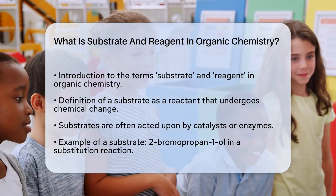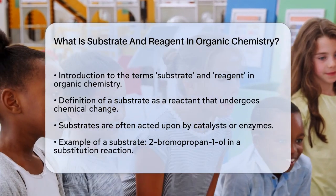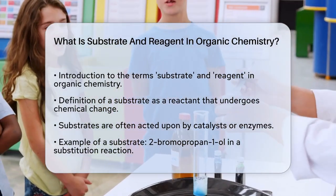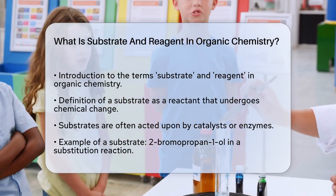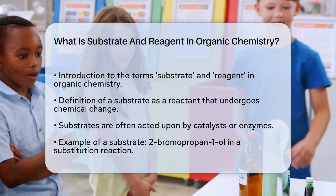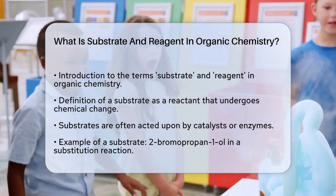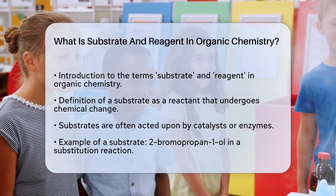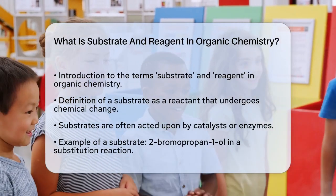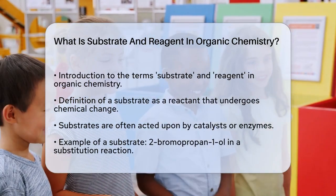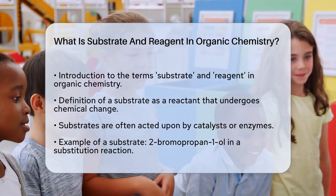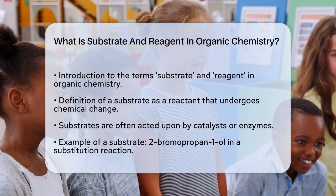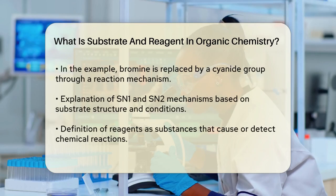First, let's talk about the substrate. In organic chemistry, a substrate is essentially a reactant that undergoes a chemical change during a reaction. This change is often facilitated by a catalyst or an enzyme. Think of the substrate as the main material that the reaction acts upon. For example, in a reaction involving an enzyme, the substrate is the molecule that the enzyme binds to and transforms into a product.